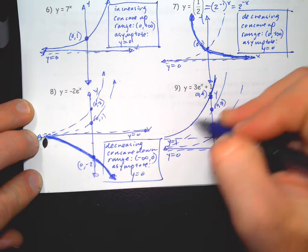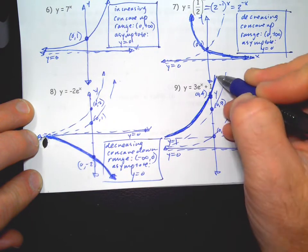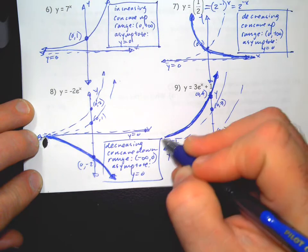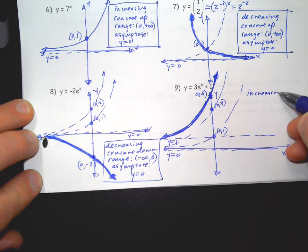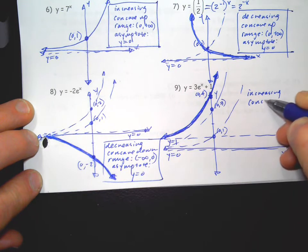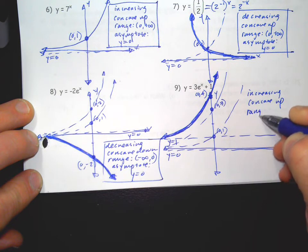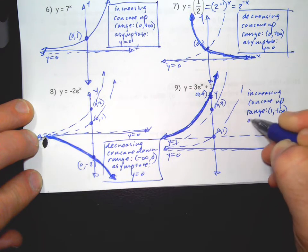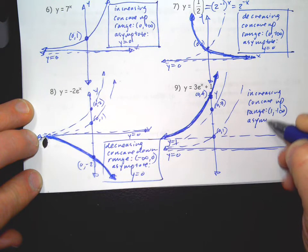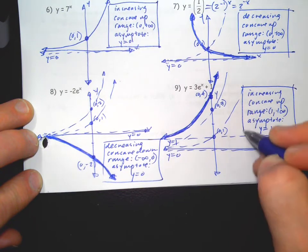But your asymptote shifts up one, so something like that. Darken it in, arrows on the ends. This is increasing, concave up. Range is one to positive infinity. Asymptote is y equals one, either y equals or it's horizontal one.